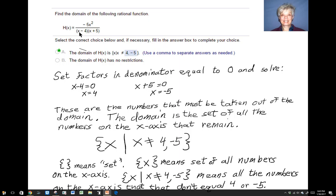You'll get x equals 4. Here x minus 4 equals 0, so x equals 4. x plus 5 equals 0, so x equals negative 5. These are the numbers that must be taken out of the domain. The domain is the set of all the numbers on the x-axis that remain.